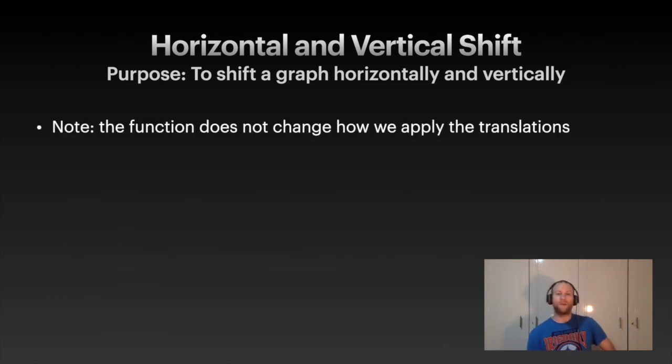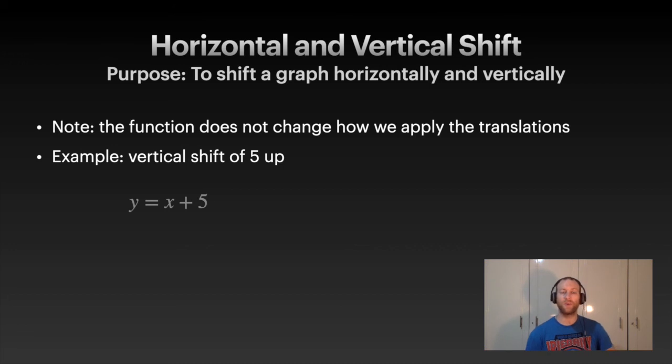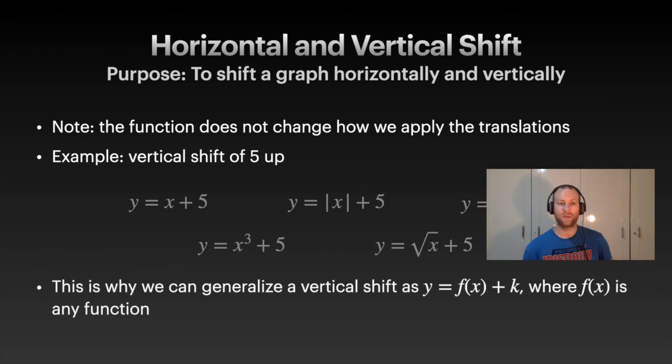So note with this, the function does not change how we apply the translations. For the example of a vertical shift 5 up, I could have y equals x plus 5. So that takes the original equation y equals x, shifts it 5 up. I could do the same with absolute value, I could do the same with x squared, I could do the same with x cubed, I could do it with the square root of x. Notice all I'm doing is adding a plus 5 at the end of the original function, and they all shift up 5. So it doesn't really matter which one that is. That's why we can generalize, and while you see this generalization of y equals f of x, some function, doesn't matter what it is, plus k, and the plus k is that shift.